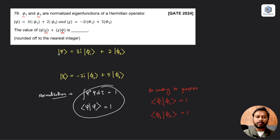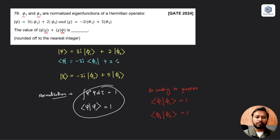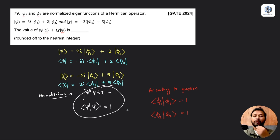To write the bra vector from a ket vector, you reverse the direction and take the complex conjugate — meaning you change the sign of any imaginary part. So the bra form of |psi⟩ = 3i|phi-1⟩ + 2|phi-2⟩ becomes ⟨psi| = -3i⟨phi-1| + 2⟨phi-2|. Similarly, the bra form of |chi⟩ = -2i|phi-1⟩ + 5|phi-2⟩ becomes ⟨chi| = 2i⟨phi-1| + 5⟨phi-2|.